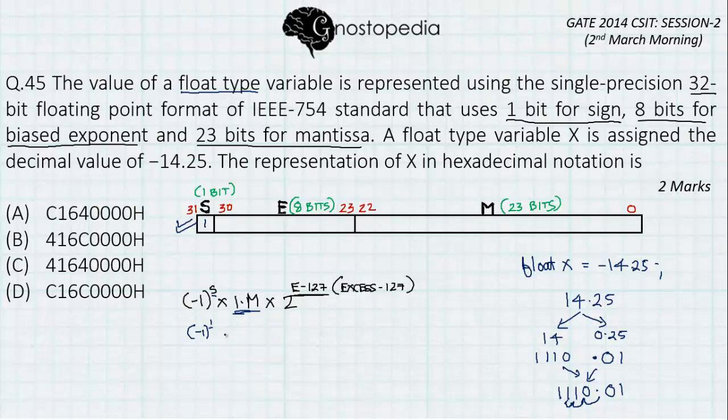And with this, the new value is 1.11001 times 2 raised to 3. Mind it, it won't be 10 raised to 3 because base 10 is used only for decimal number systems. Let us now find the value of E and M respectively.